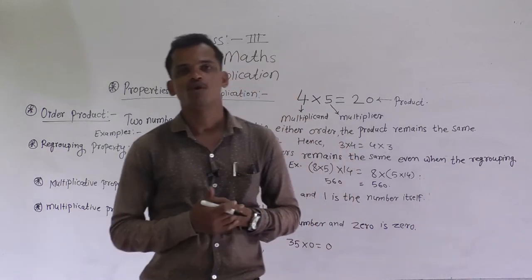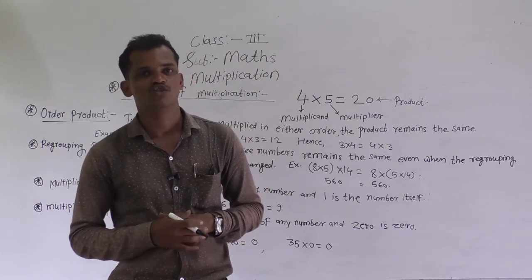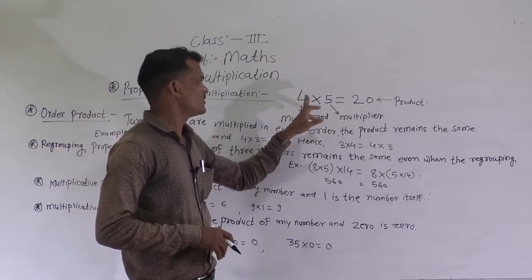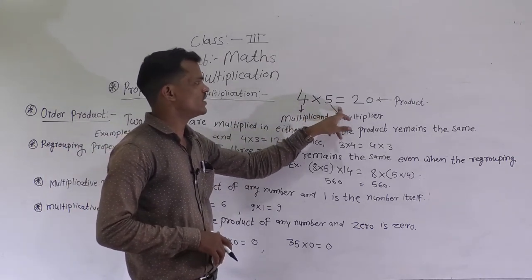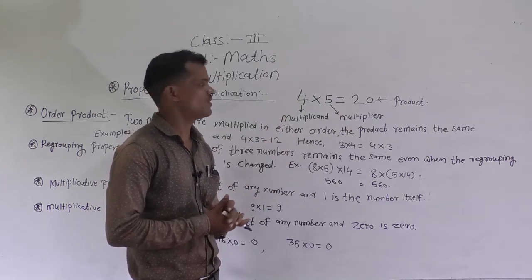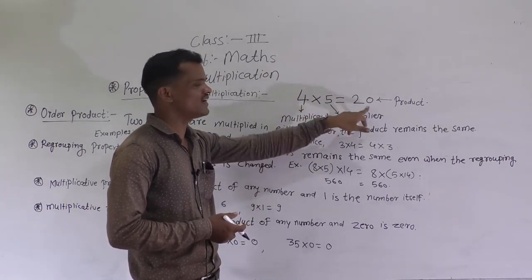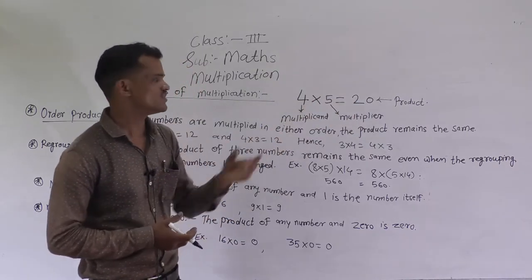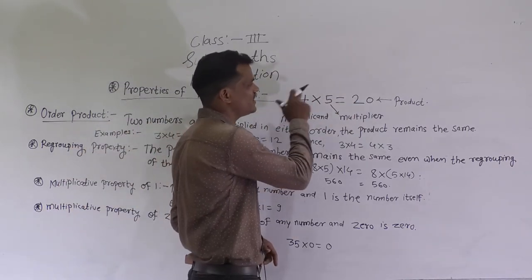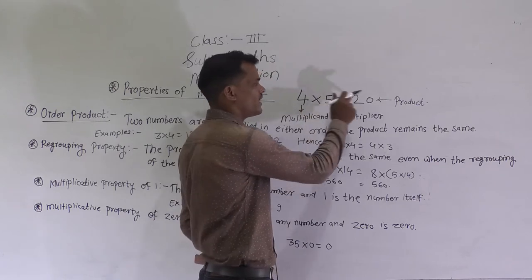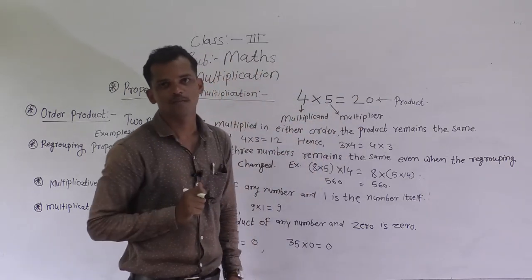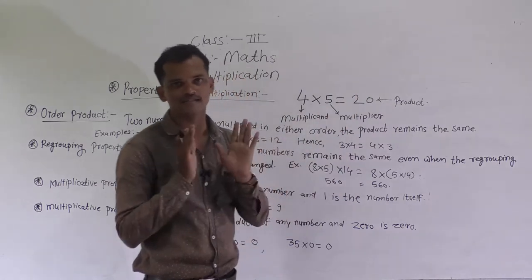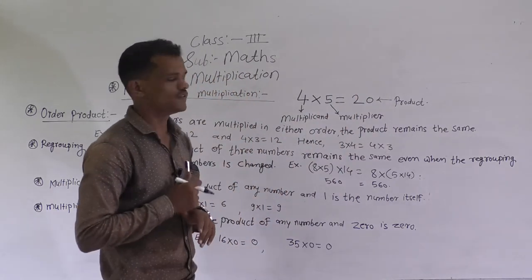We will learn the properties of multiplication. You know 4 into 5 is equal to 20 because 4 5s are 20 or 5 4s are 20. Here 4 is the multiplicand, 5 is the multiplier, and 20 is the product. The result of multiplication is called the product — remember this.